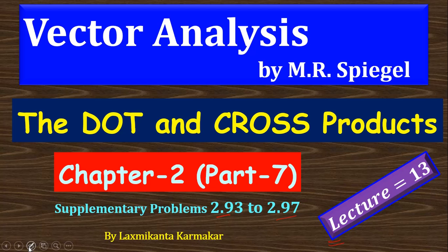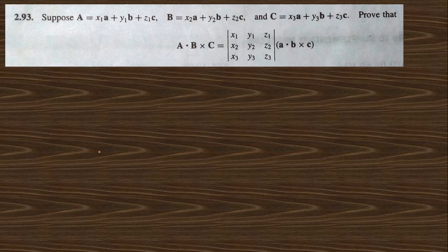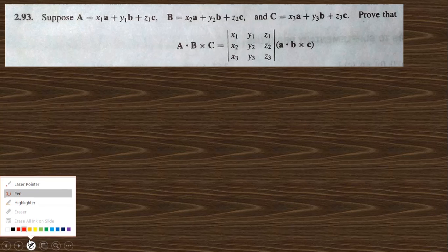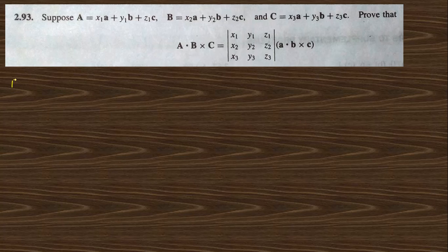If you want, the link will be provided in the description box. In this video we go to problem 2.93, which says: given vectors a, b, c, prove the scalar triple product identity.